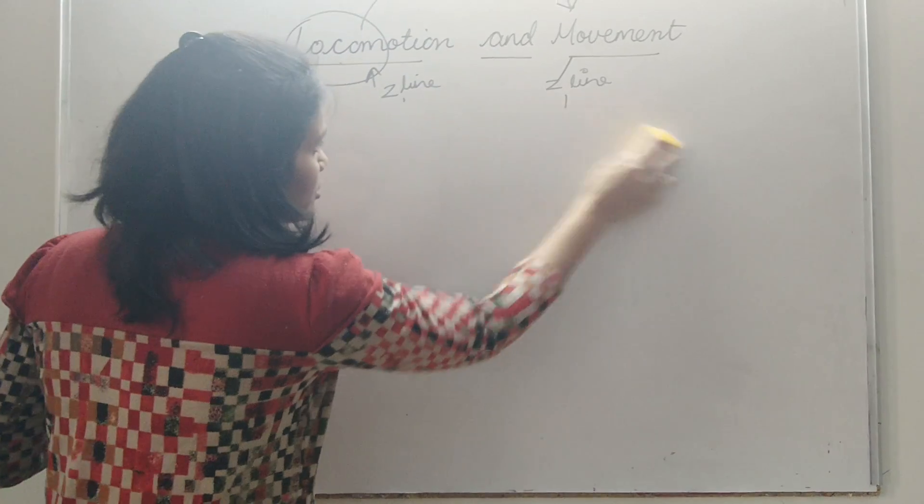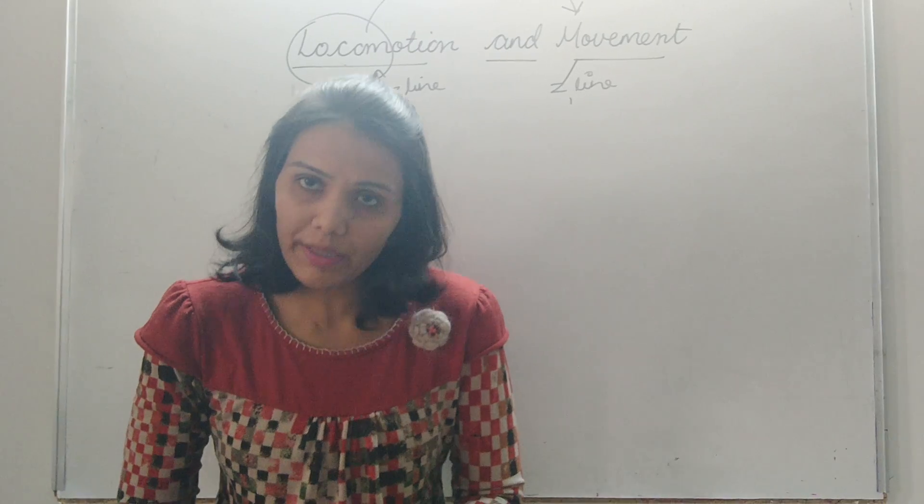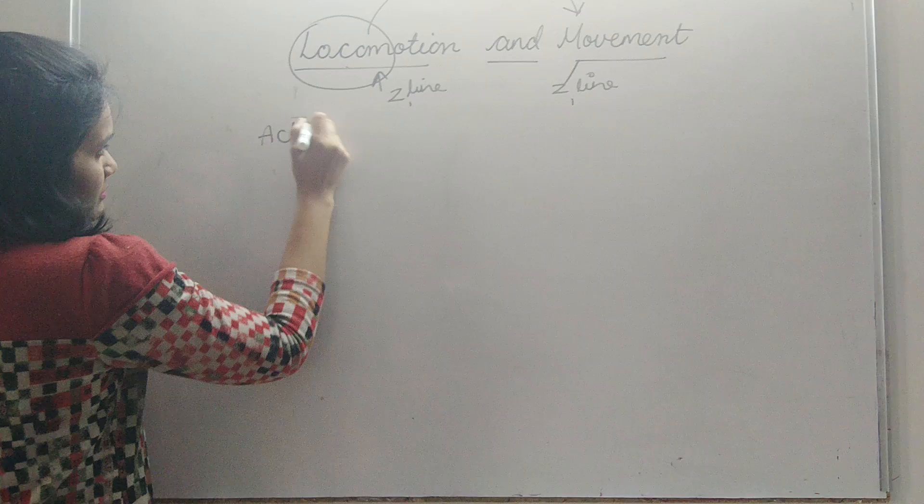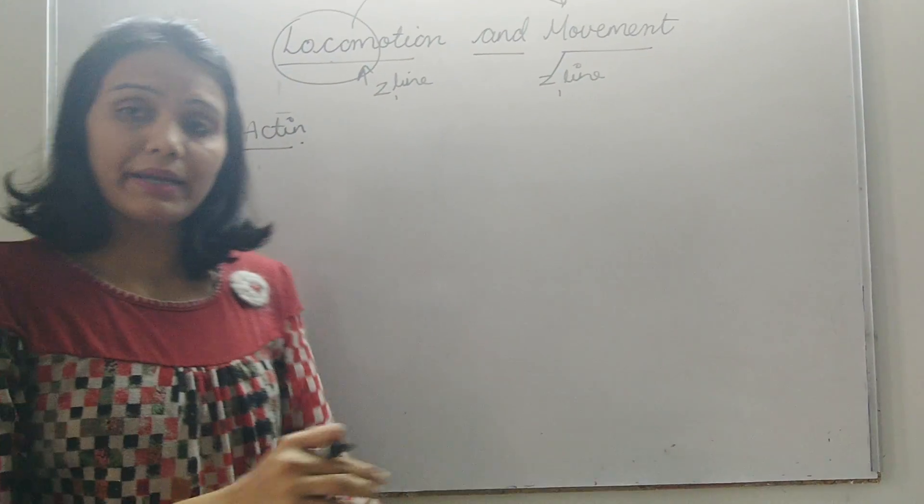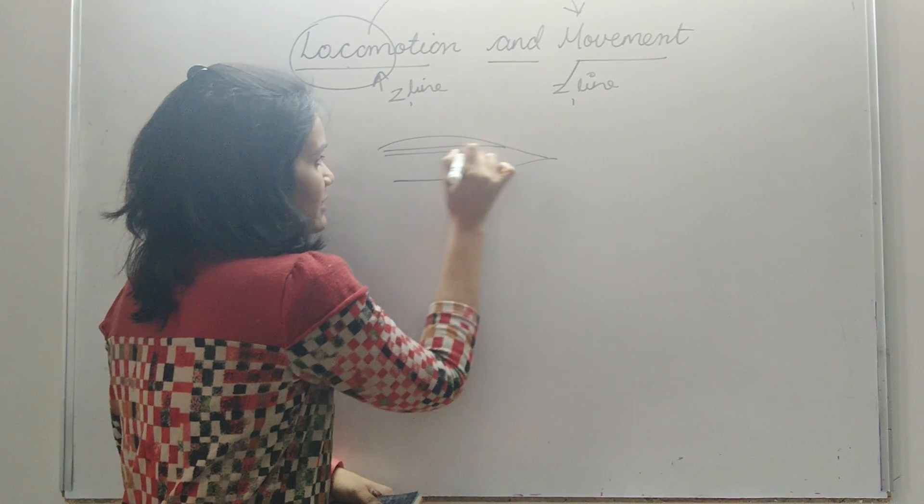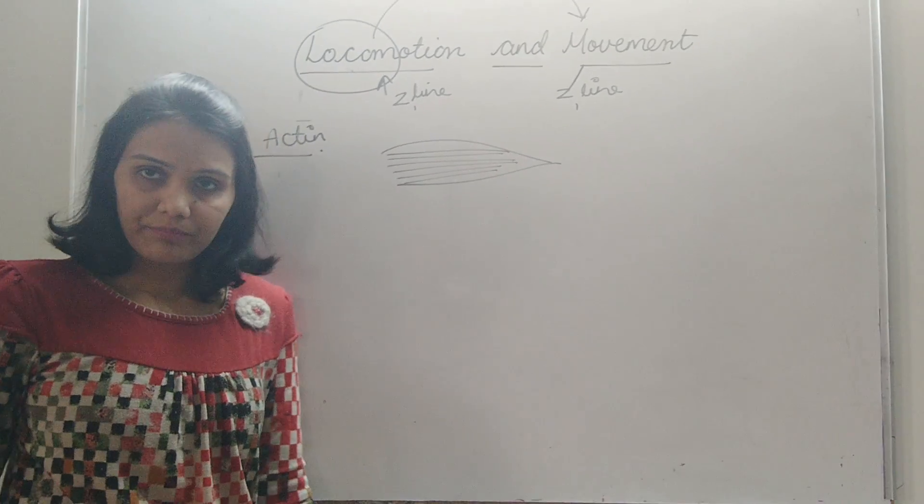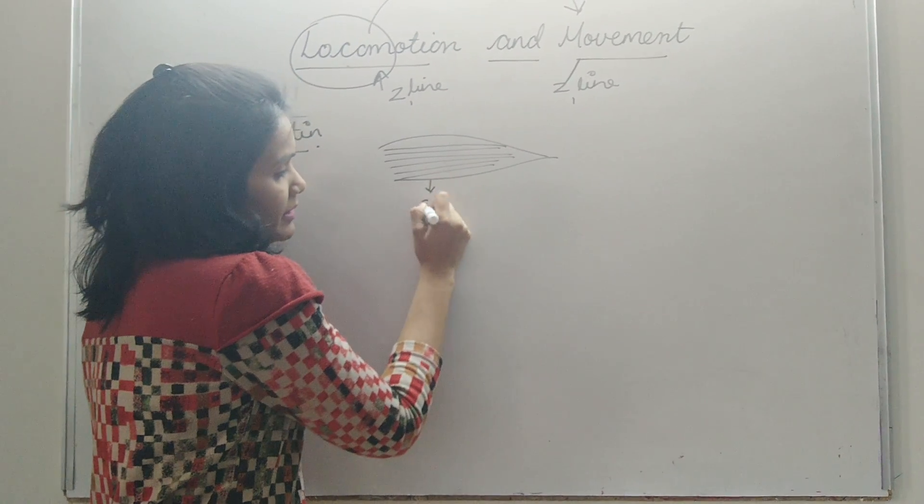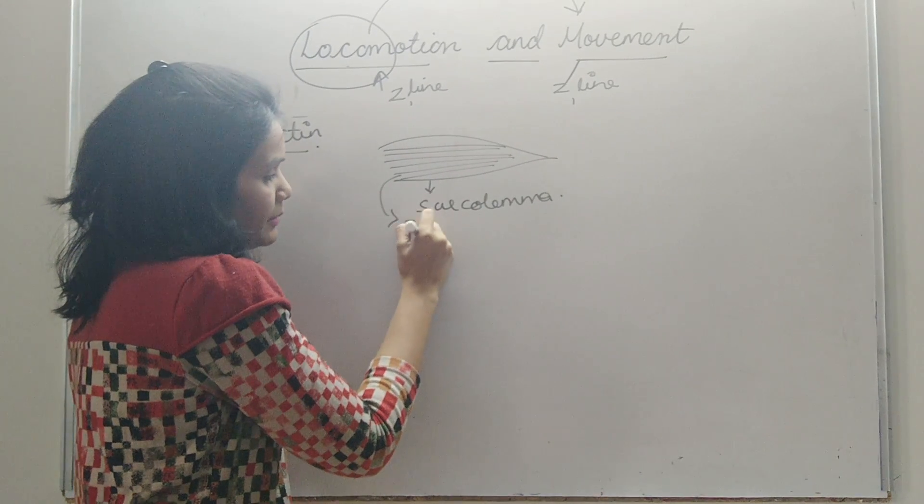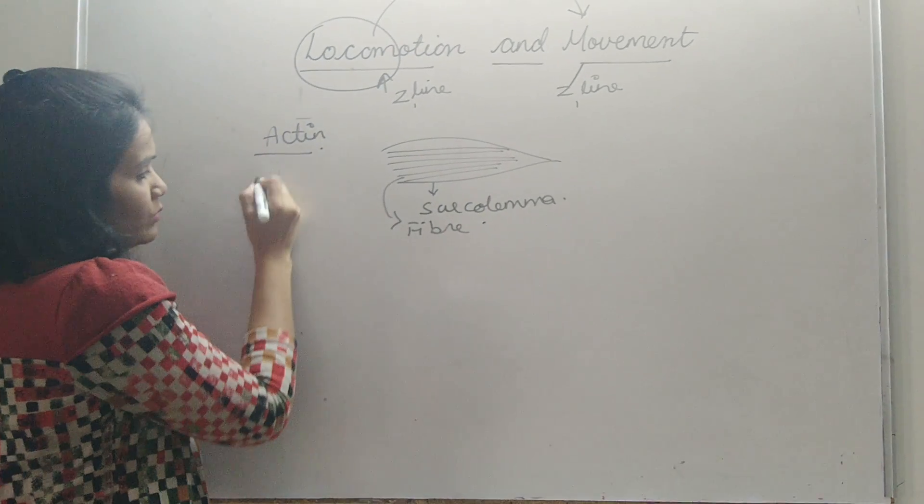Now let us see what the structure of the sarcomere is. How a contraction and relaxation brings the movement in our body. Before that let us see the myofilament. A muscle fiber is made up of many, like a rope they are arranged. Fascicles, fasciculi, parallel rows of these myofilaments. The plasma membrane is called sarcolemma. Now let us see the structure of a single muscle fiber. It is made up of two proteins. One is actin and one is myosin.